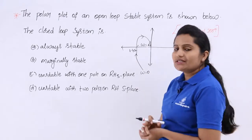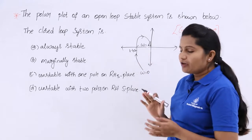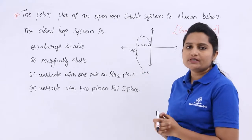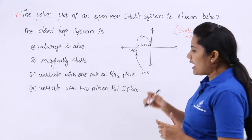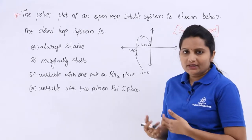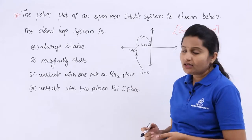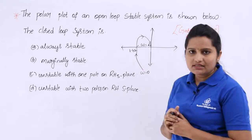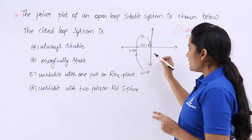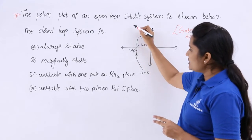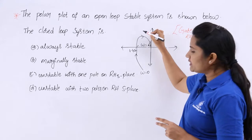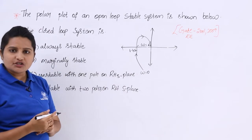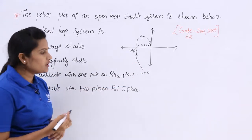Coming to this open loop system, what we need to do is convert this open loop system plot into a closed loop system plot. I will give a more detailed step-by-step procedure in the next class. For now, I am going to give a shortcut procedure. You need to consider the mirror image of the given plot and enclose it with the Nyquist contour.